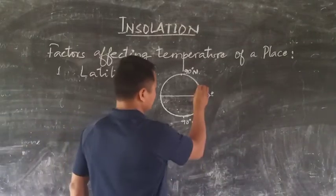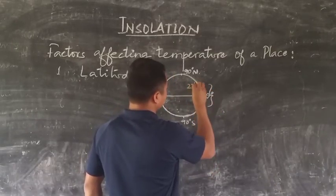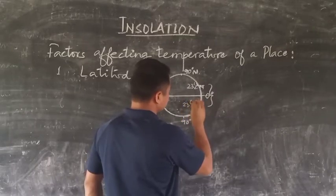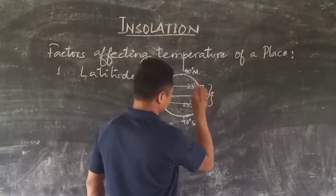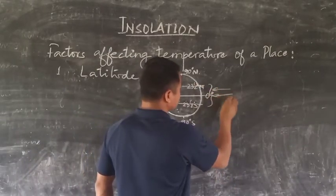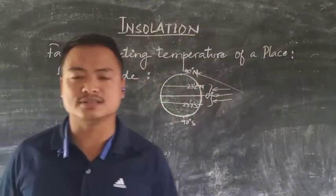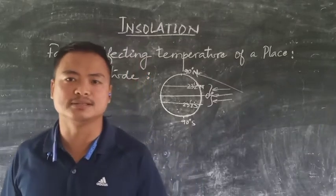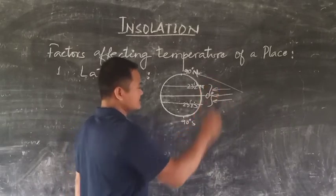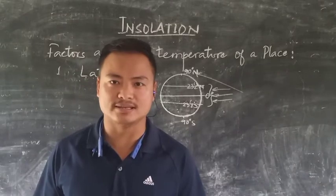This is because the movement of the sun takes place between 23.5 degrees north — the Tropic of Cancer — and 23.5 degrees south — the Tropic of Capricorn. These are the regions that receive the vertical rays of the sun throughout the year, while above 23.5 degrees the rays of the sun received are much more slanted. Hence, lower latitudes receive vertical rays of the sun almost throughout the year and have higher temperature.